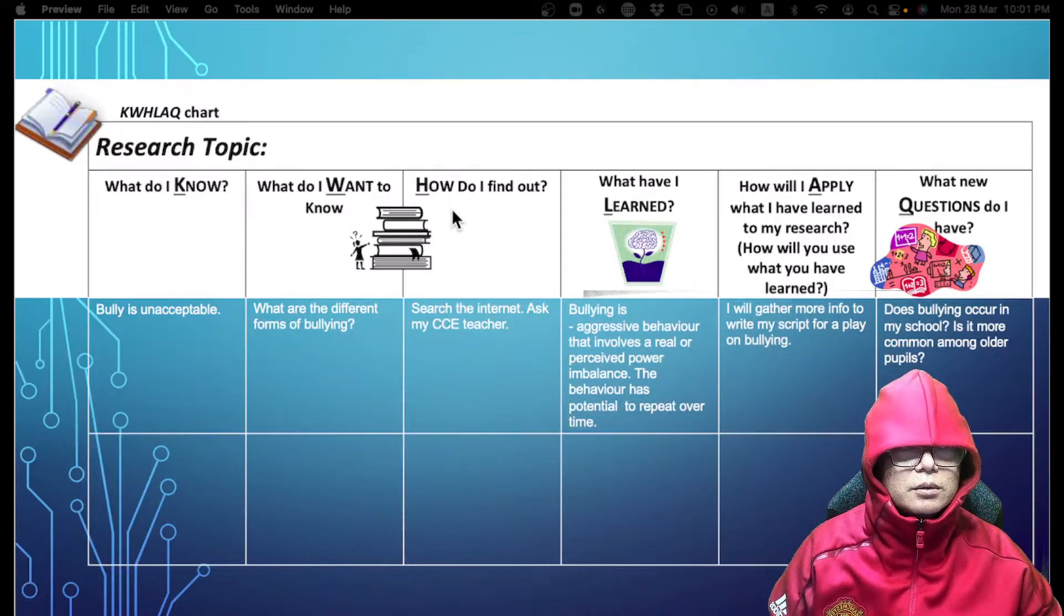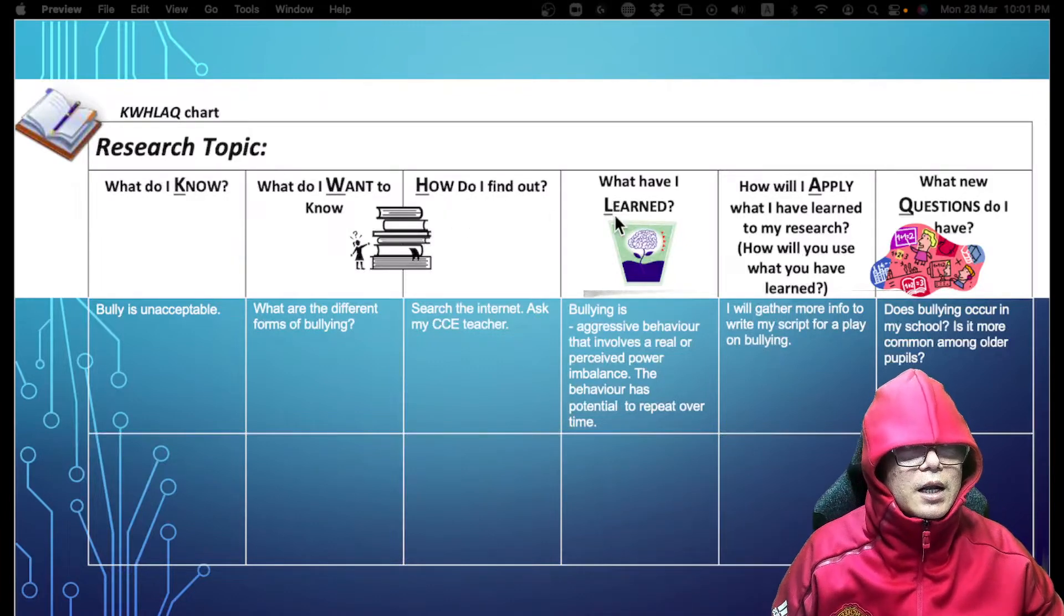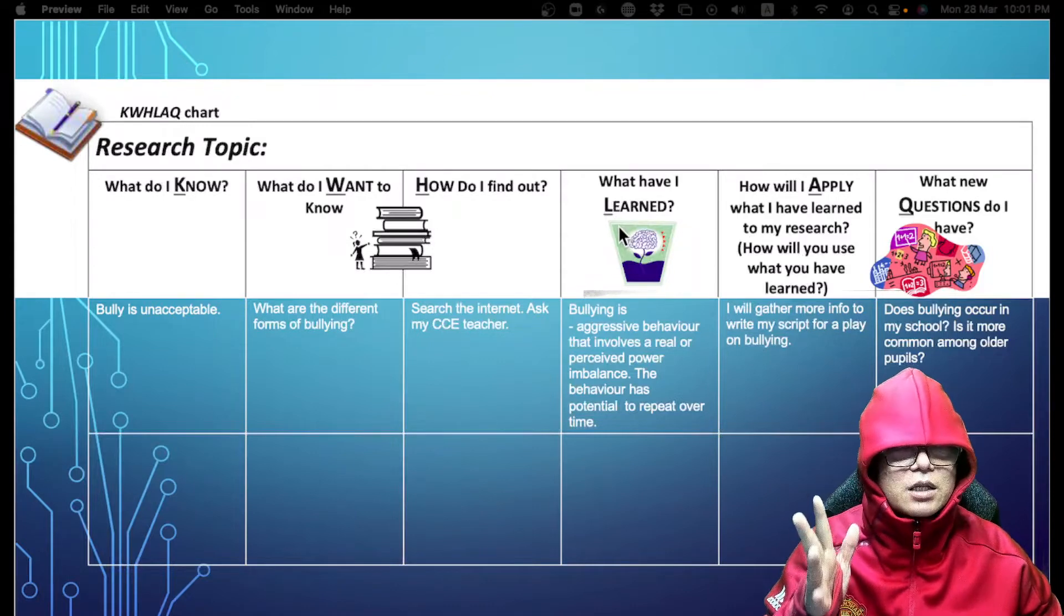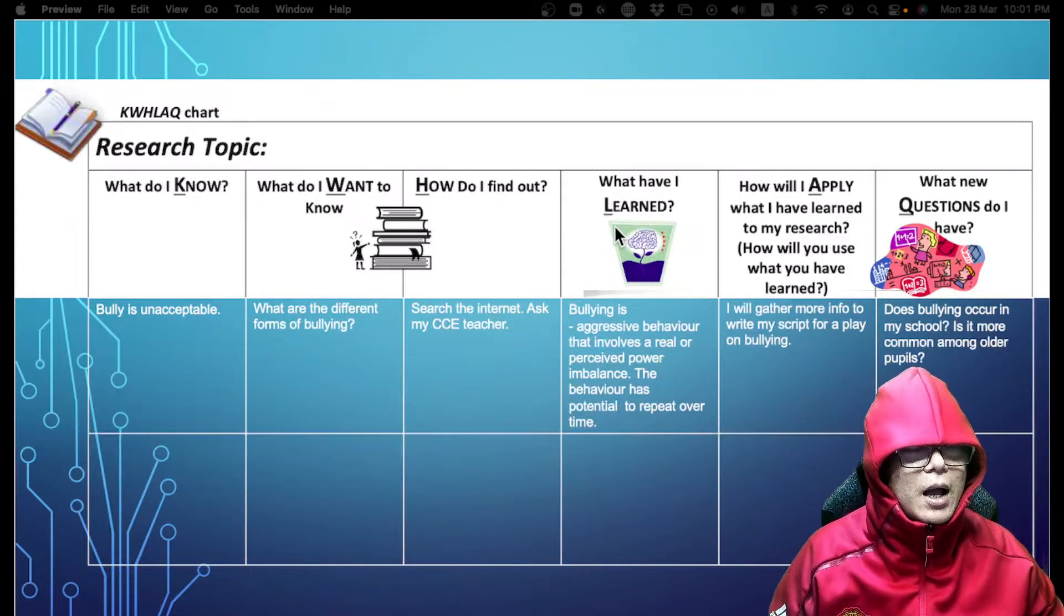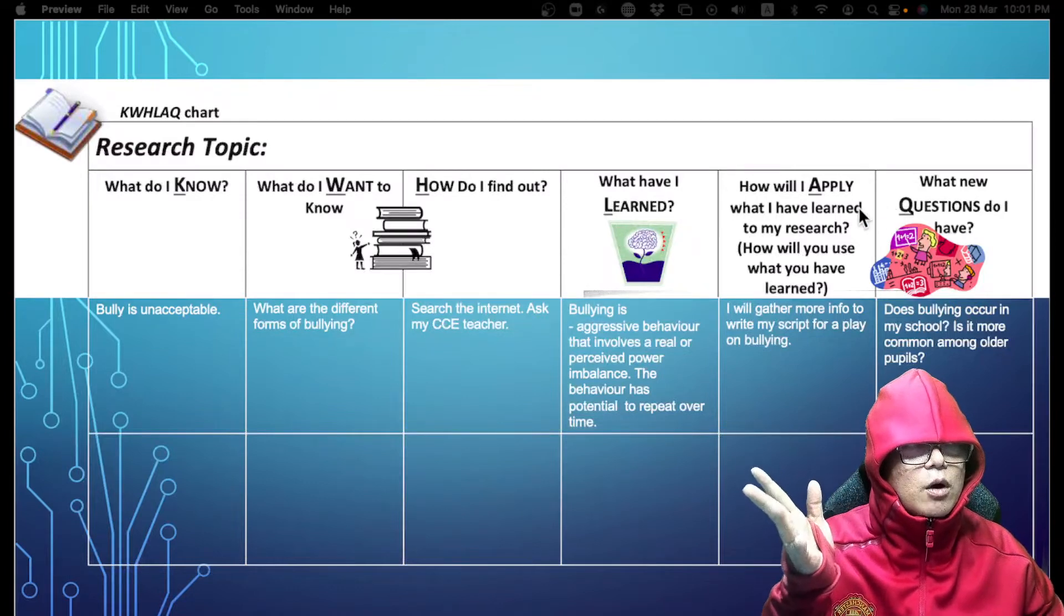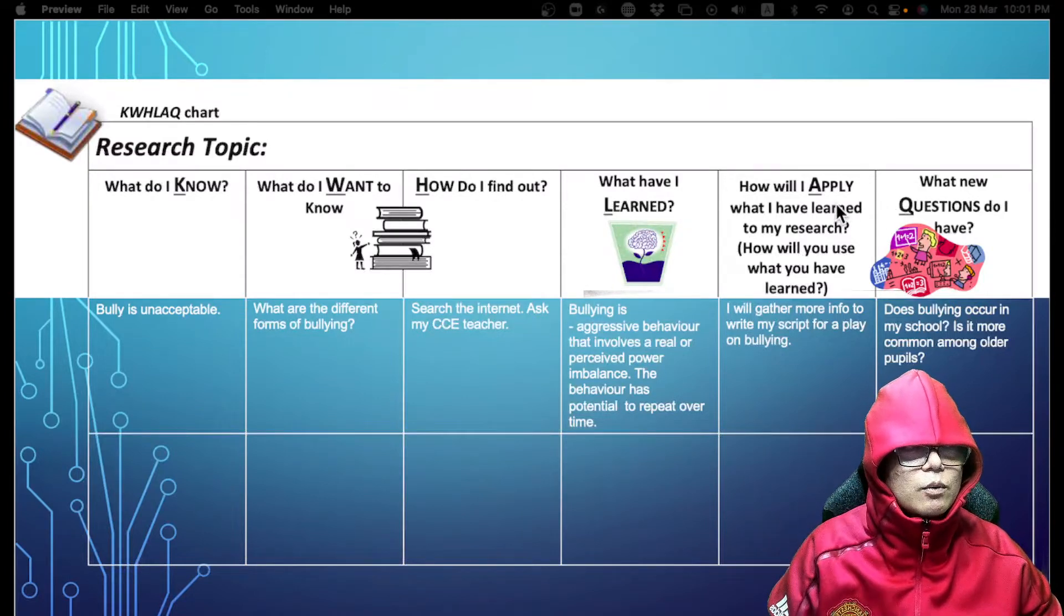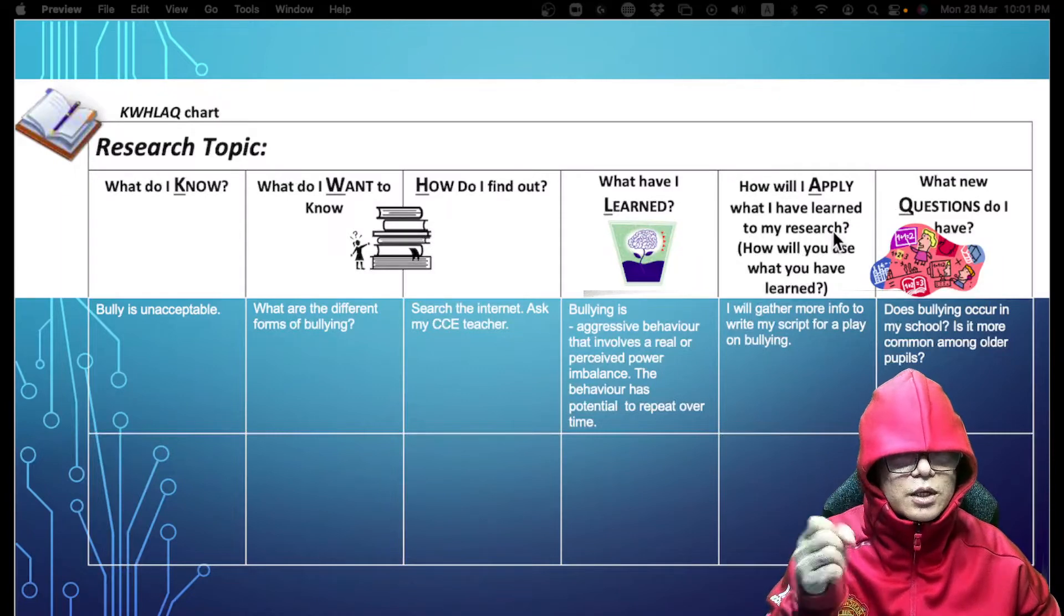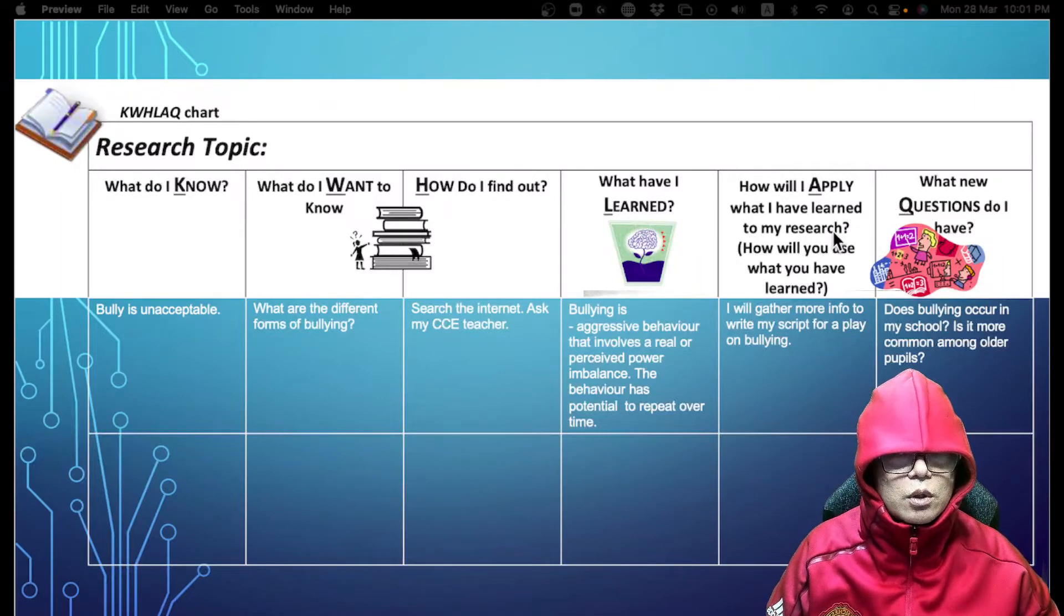After that you have L which stands for learning - what I have learned from this research. Then A stands for how can I apply what I have learned to this research. And then we have Q, the last one, which is what are the new questions after I research.